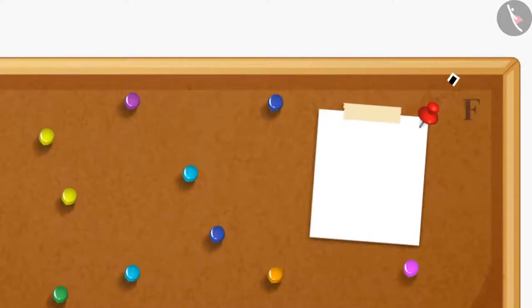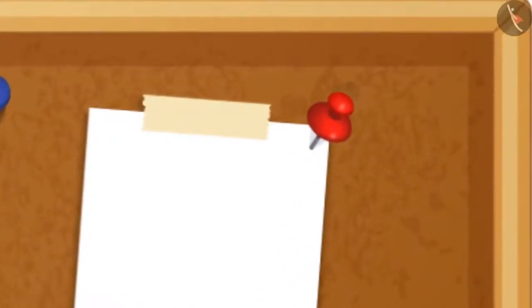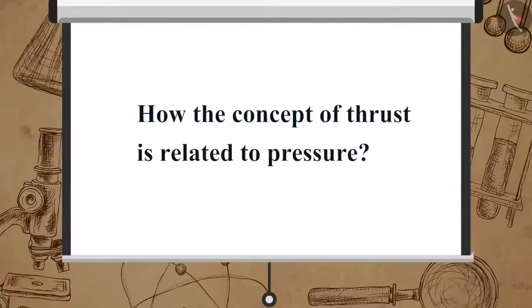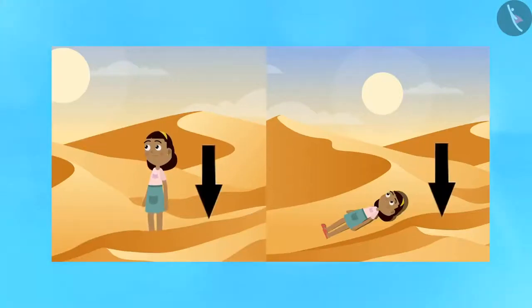Have you ever fixed a poster on a bulletin board with the help of drawing pins? You will have to apply force on the head of the drawing pin. The force on the drawing pin is perpendicular to the surface area of the bulletin board, and this force acts on a smaller area on the tip of the drawing pin.